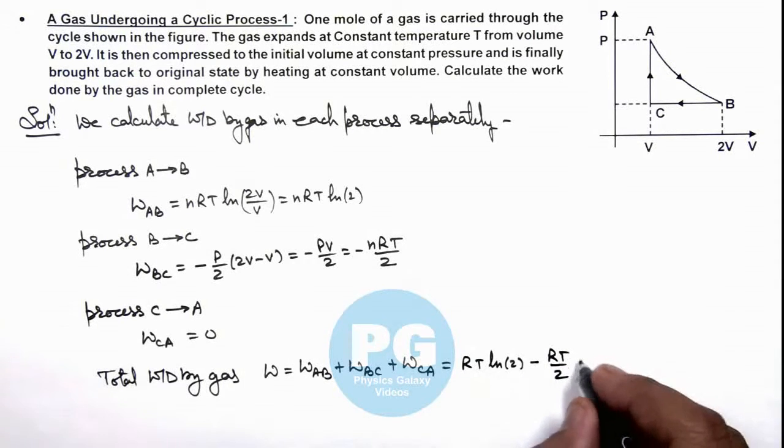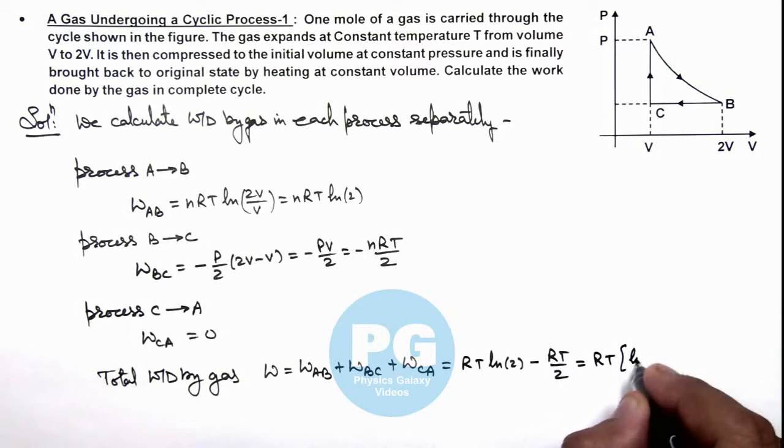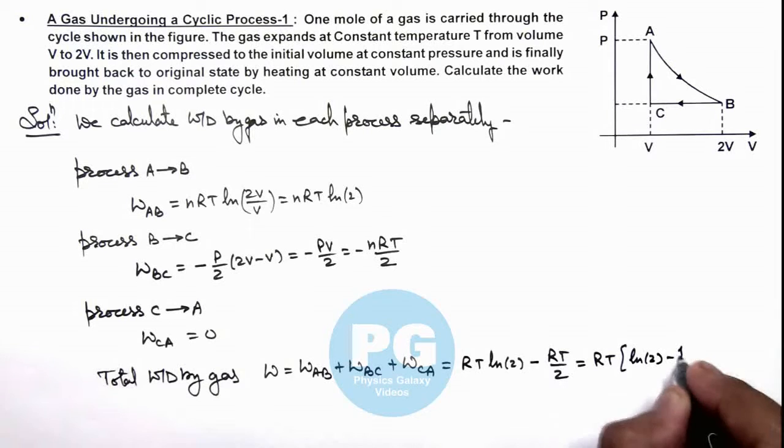Since W_CA is zero, the final value for the work is RT(ln(2) - 1/2). This is the result of this problem.